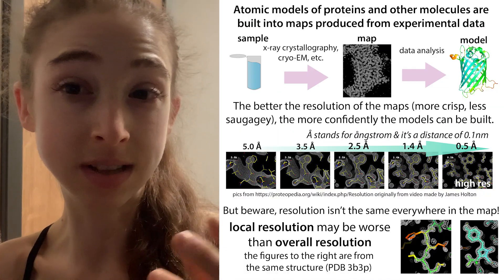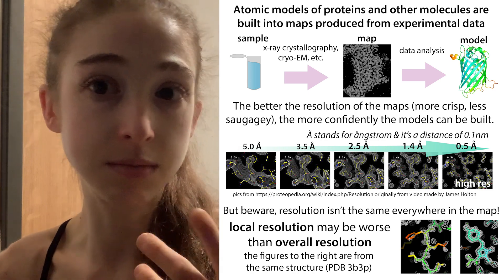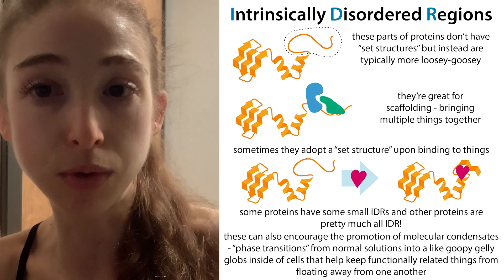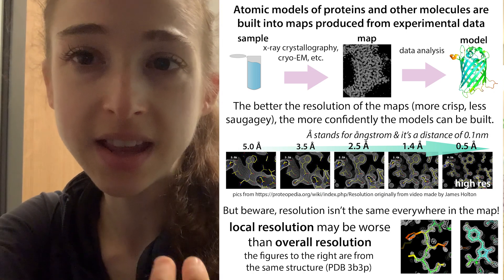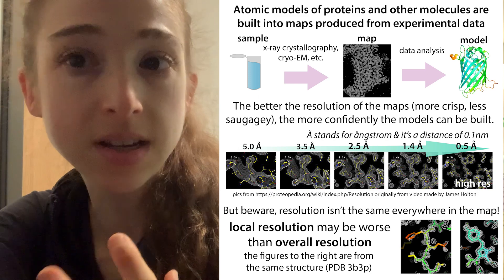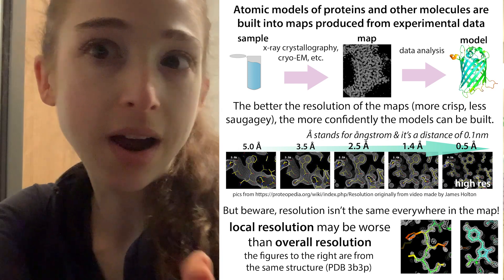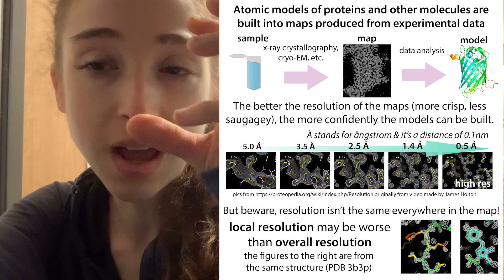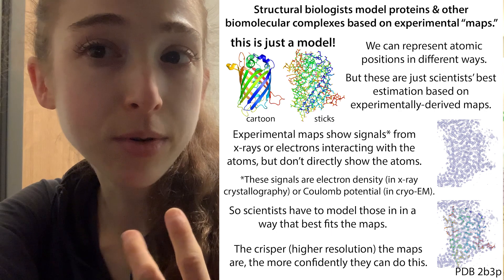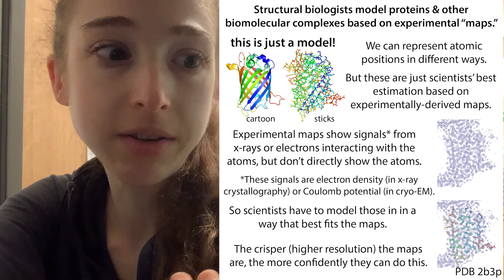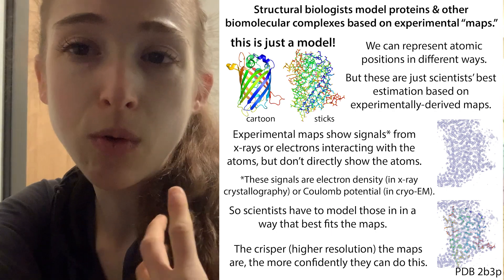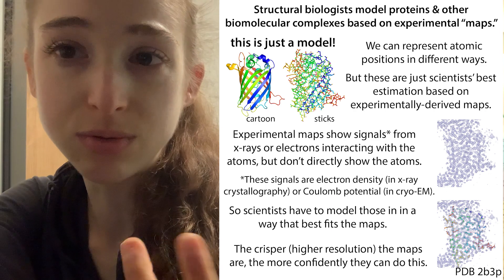Some proteins are just really dynamic and flexible, and that doesn't mean the structure can't tell you really cool things. A low-resolution structure of a complex with multiple proteins can still be really valuable — you can tell the orientation of the different components relative to one another. And if you have higher-resolution structures of those individual components, you can model them in based on their overall shape in the complex.